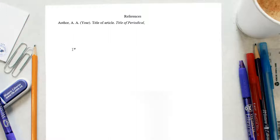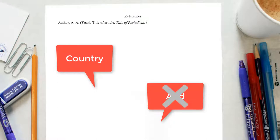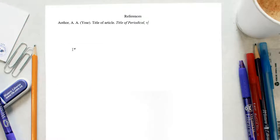Title case means principal words are capitalized, but articles, conjunctions, and prepositions are not. So you would capitalize country but not and. This is followed by the volume number, which is also italicized, and the issue number if present. The issue number is in brackets and is not in italics. This is followed by a comma and the page range for the article with a period.